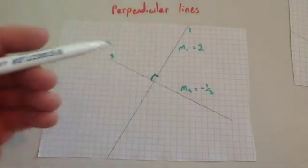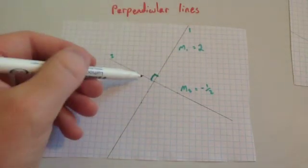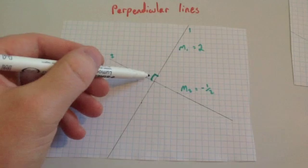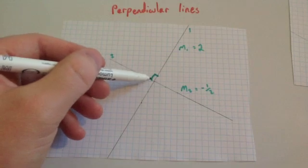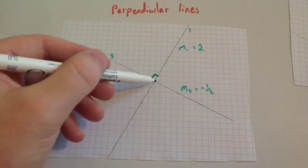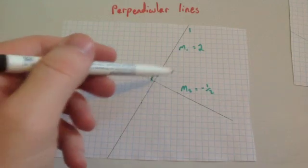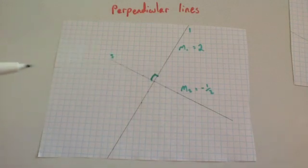The gradient for the second line: if you choose a point and go across one, down a half — across one, down a half — so the gradient is equal to minus a half.